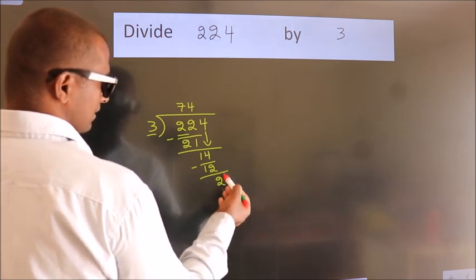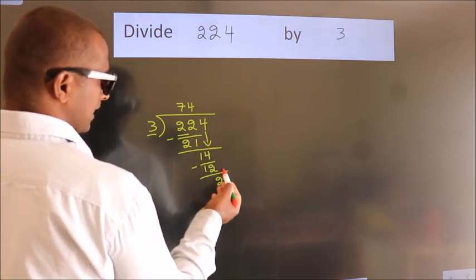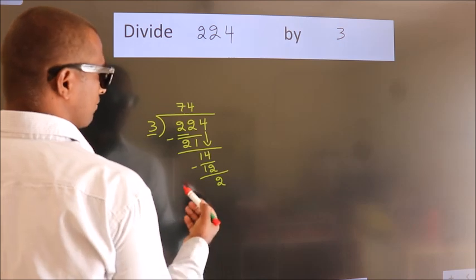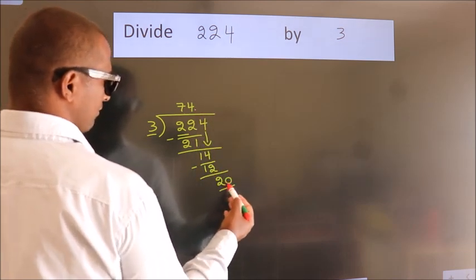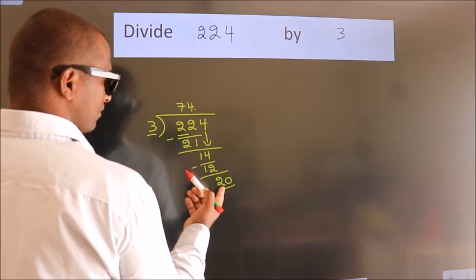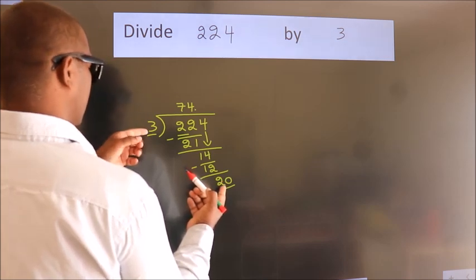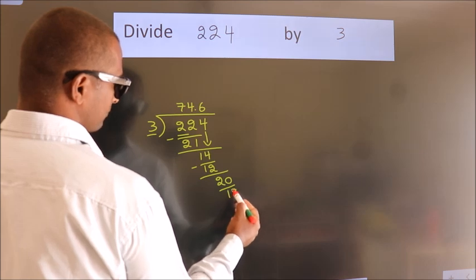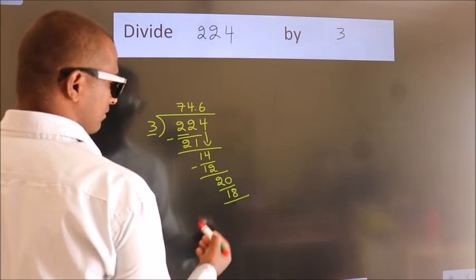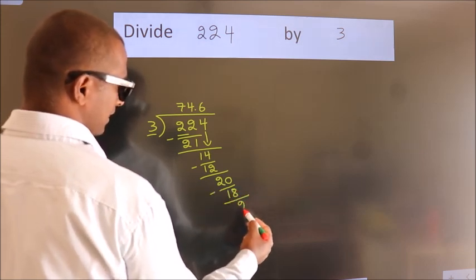After this, no more numbers to bring down. So what we do is we put a dot and take 0. So 20. A number close to 20 in the 3 table is 3 times 6 equals 18. Now we subtract. We get 2.